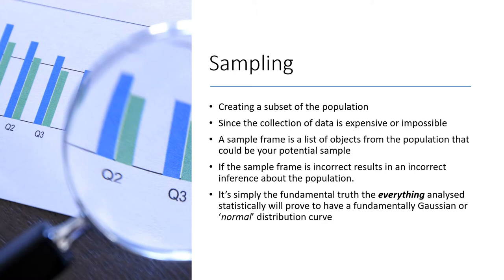This slide speaks about the details of sampling. What is sampling? Sampling means creating a subset of the population. The population is wide, so we have to understand the population through samples, because collecting entire data may be expensive or sometimes impossible. We should identify a sampling frame — the list of objects from the population that could be your potential sample. If the sampling frame is incorrect, the result is also incorrect and the researcher may be biased.